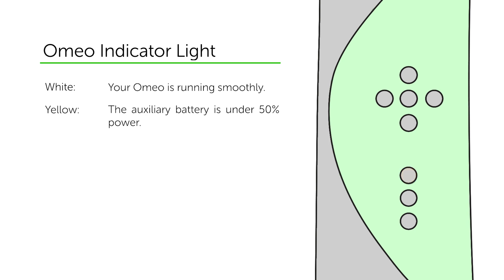If the light continuously pulses yellow, this means the auxiliary battery in your Omeo is under 50% battery power. Your machine will conserve power by turning off the headlights and USB charging station.